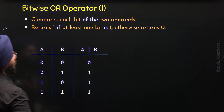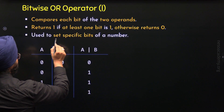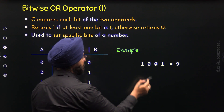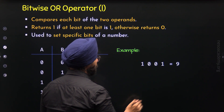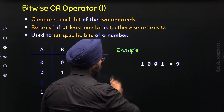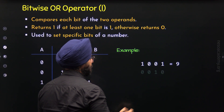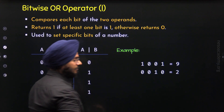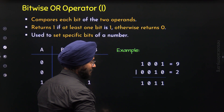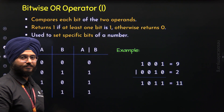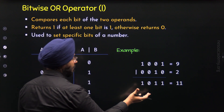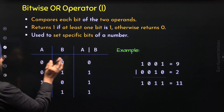We use the Bitwise OR Operator to set specific bits to 1 in a number. Let's take an example. We have the binary number 1001 and we want to set the second bit to 1. For this purpose, we set the corresponding bit to 1 in the second operand, giving us 0010, which is 2 in decimal. Performing Bitwise OR of these two binary numbers gives us 1011 as the result, which is value 11 in decimal. So clearly, Bitwise OR of 9 and 2 is 11. We can also observe this from the truth table.